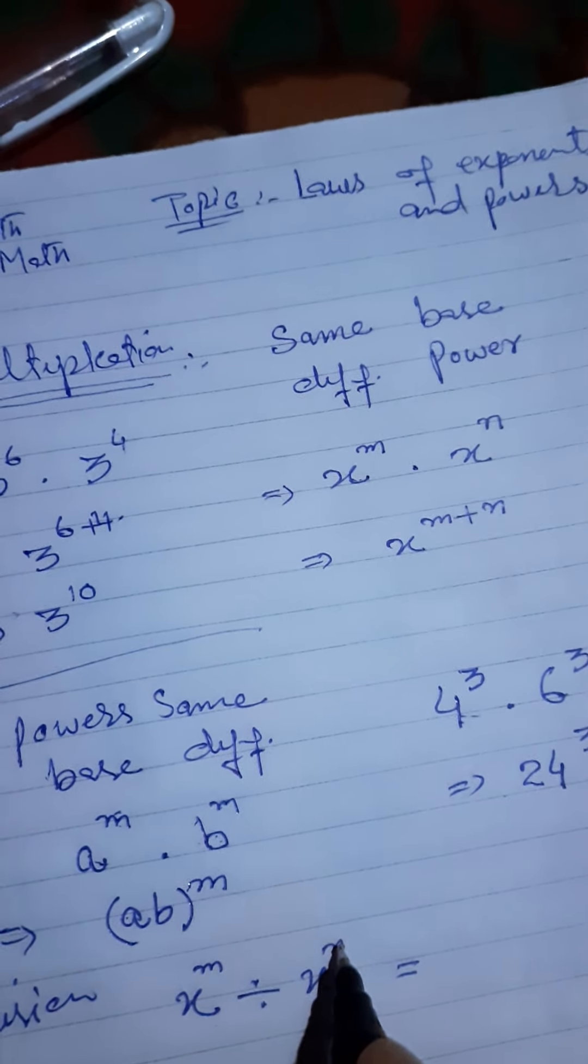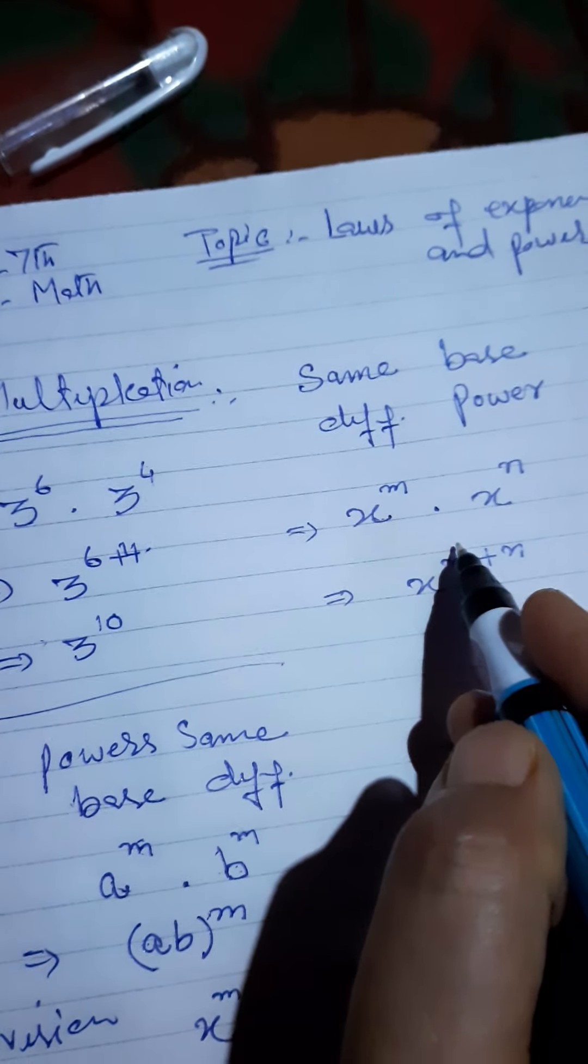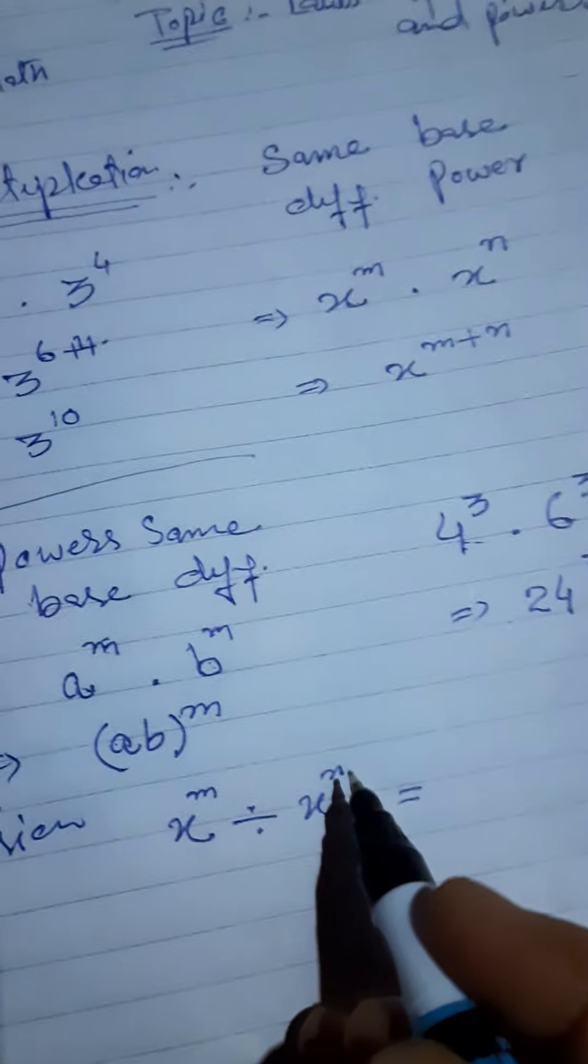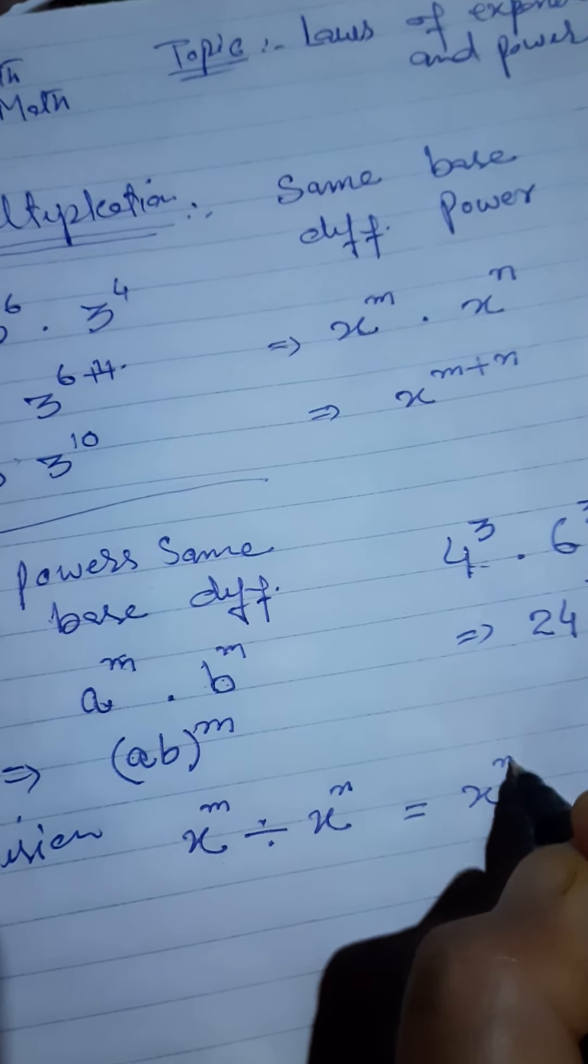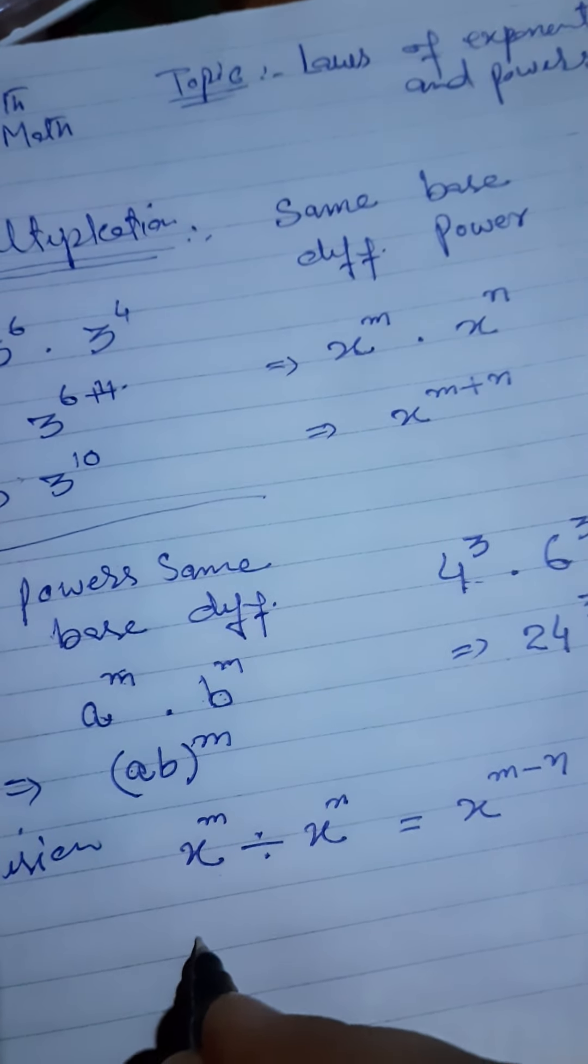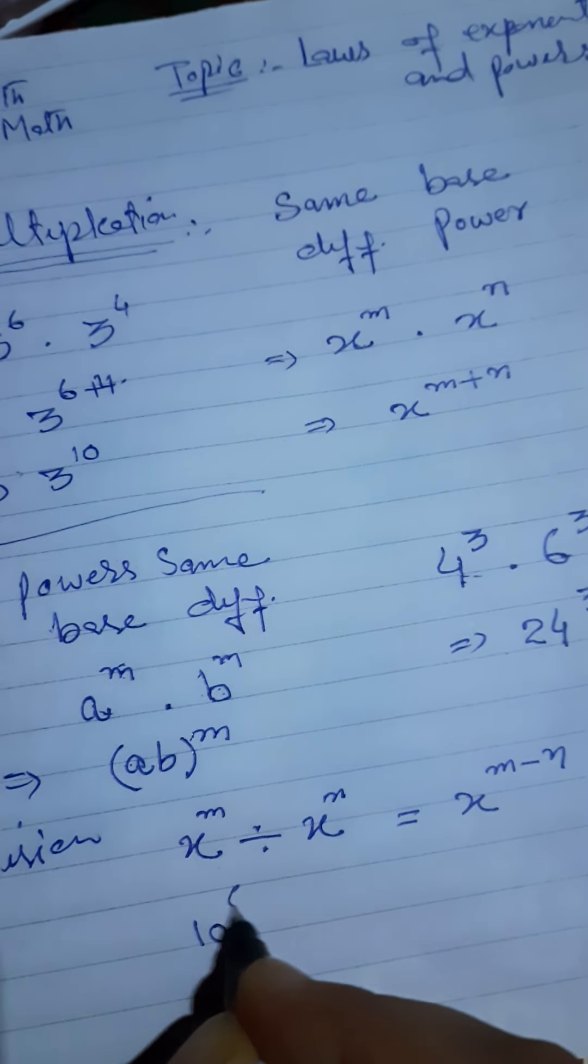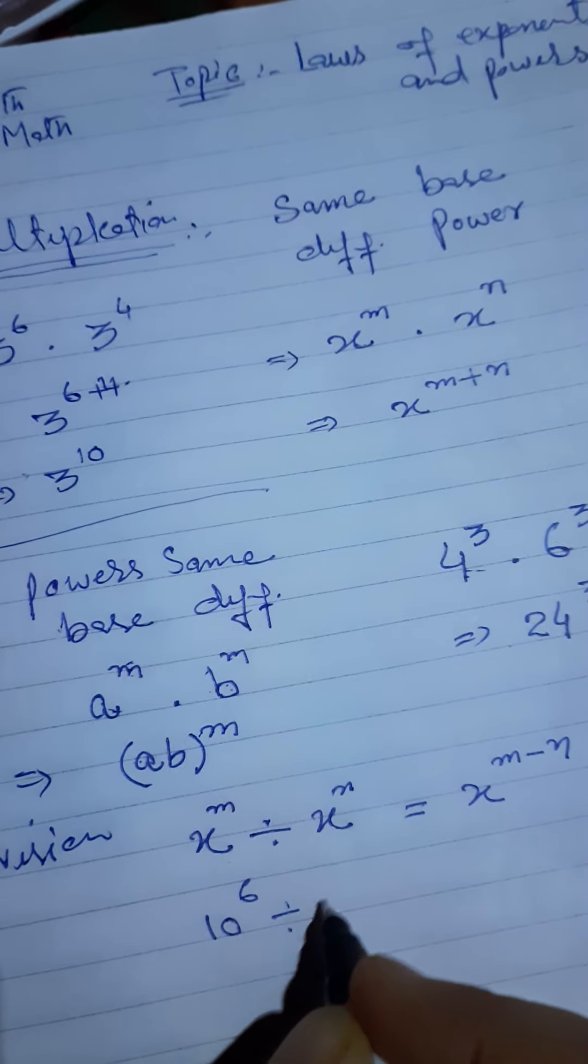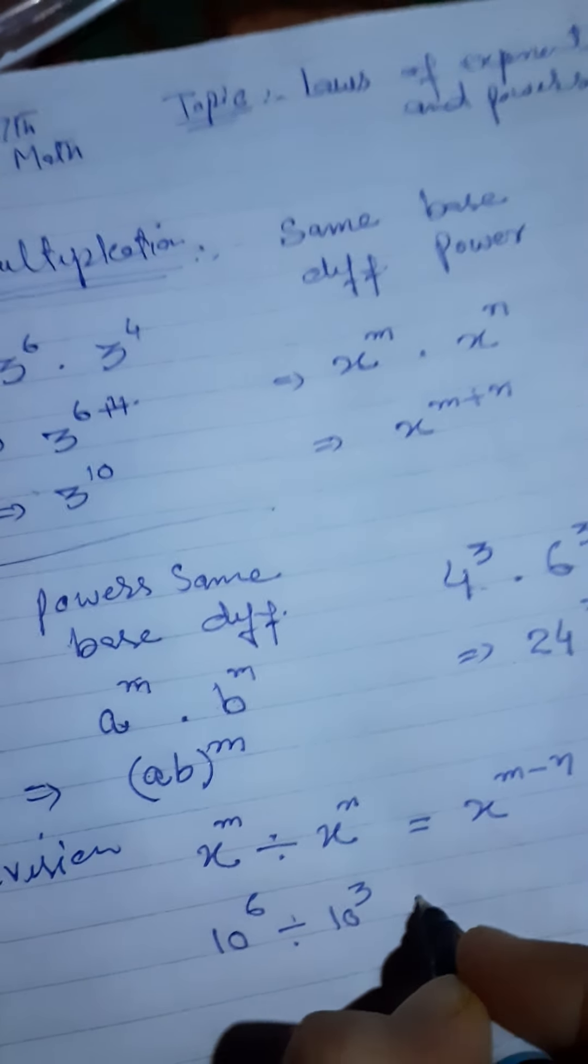In multiplication we add, but in division we subtract. So it's x raised to power m minus n.